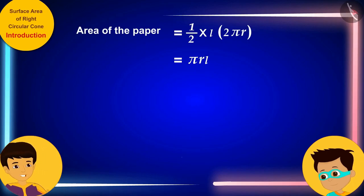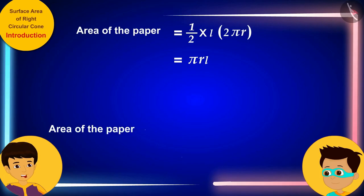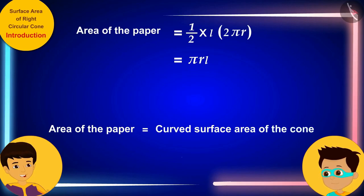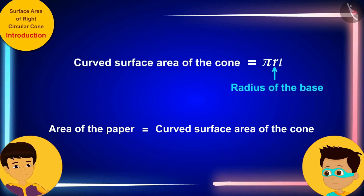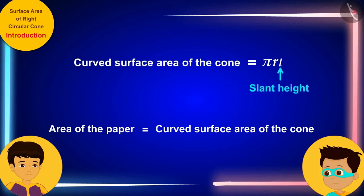Oh, wow! Thomas! The area of the paper is equal to the curved surface area of the cone. So, look! We get the formula for the curved surface area of the cone, where r is the radius of the base, and L is the slant height of the cone.